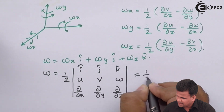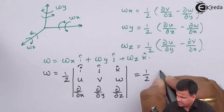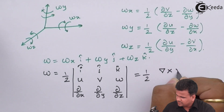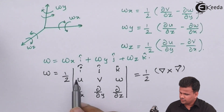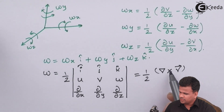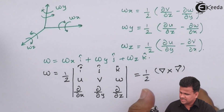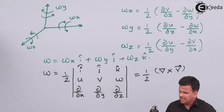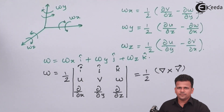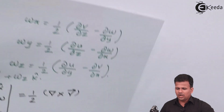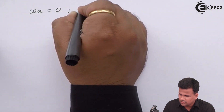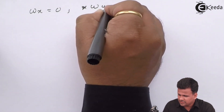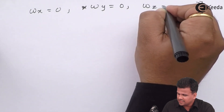This can also be written as half of (∇ × V), since the cross product of two vectors can be represented in determinant form. For irrotational flow, all components of omega equal zero: omega_x = 0, omega_y = 0, and omega_z = 0.